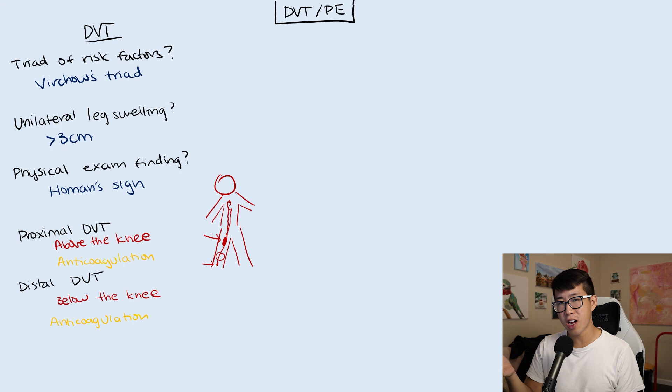It still matters in terms of risk stratification. Previously for distal DVTs, you could do serial ultrasounds. That was previously how we would manage that. This is still an option if they have low risk and the risk of embolizing or propagating is very low. But in general, it's more favored to anticoagulate these patients as well.